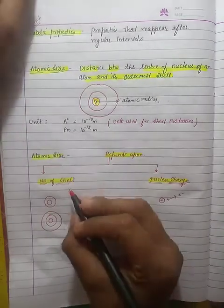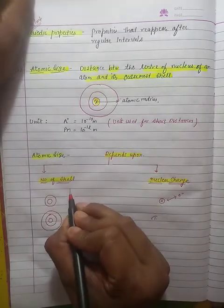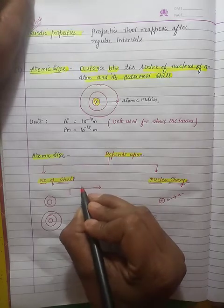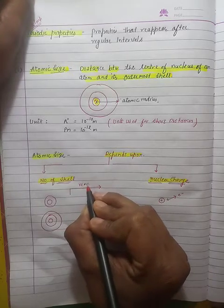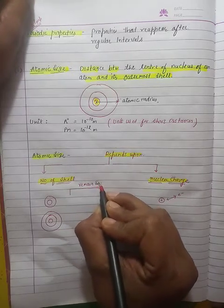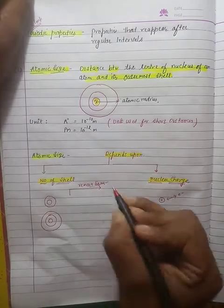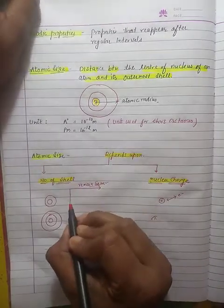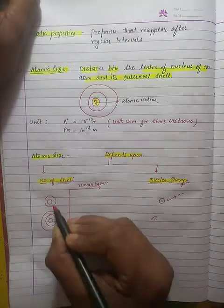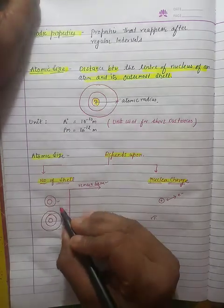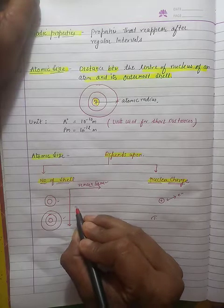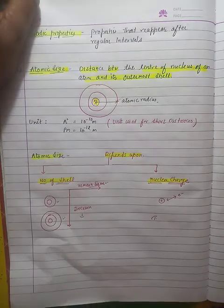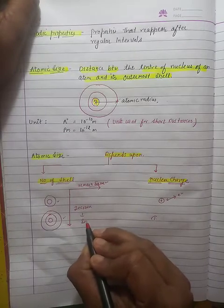As we discussed, as we go along the period, the number of shells remains the same. But as we go down the group, the number of shells increases. Due to the increasing number of shells, the atomic size also increases.